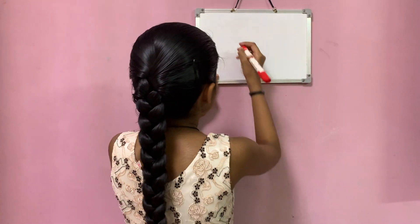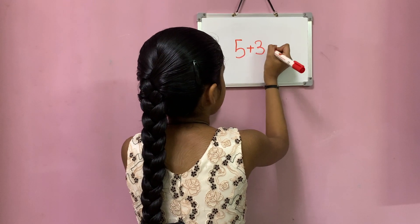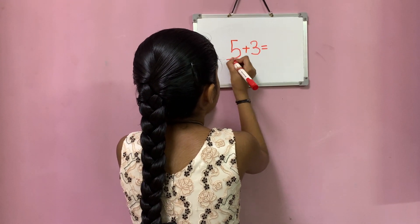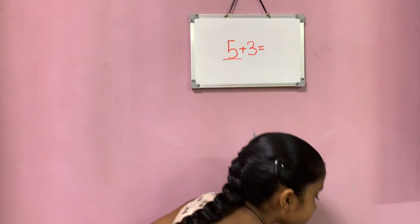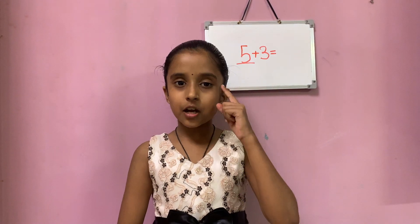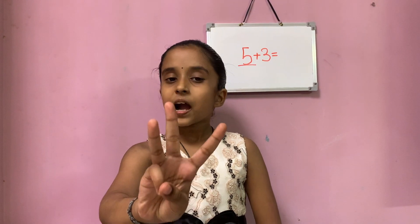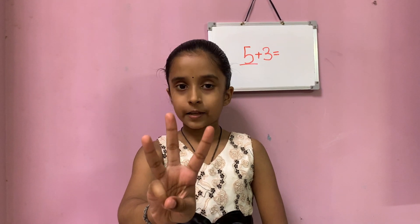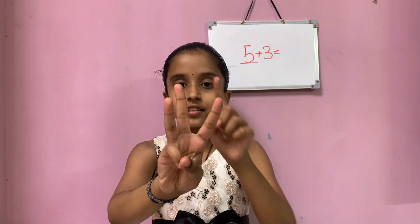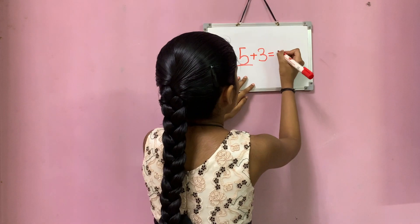Let's see another example for the mind method. Five plus three equals. Five is the big number. Keep the big number five in your mind and the small number three in your hands. Now let's forward count from five: six, seven, eight. Eight is the total answer.